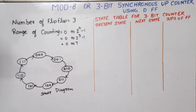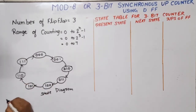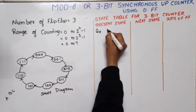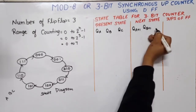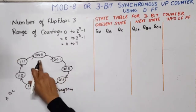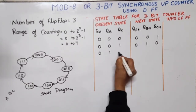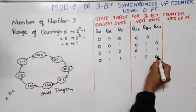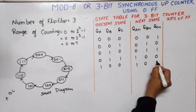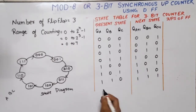Now if we have to design it, first we will create the excitation table. The head of the arrow shows the next state and the tail shows the present state. We have three flip-flops: A, B, C. The present state is QA, QB, QC and the next state is QA+1, QB+1, QC+1. Present state 0 goes to next state 1; present state 1 to next state 2; 2 to 3; 3 to 4; 4 to 5; 5 to 6; 6 to 7; and 7 to 0. These are our states.